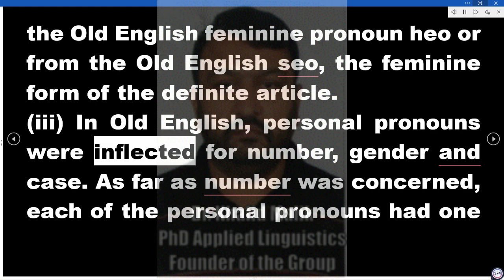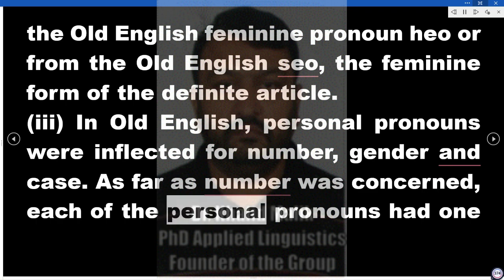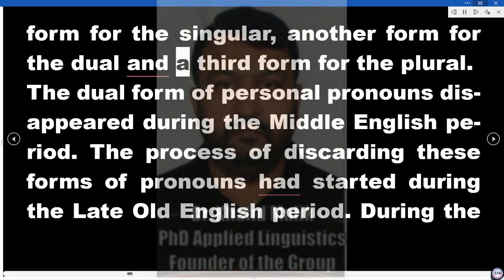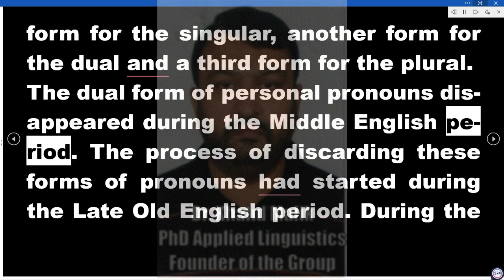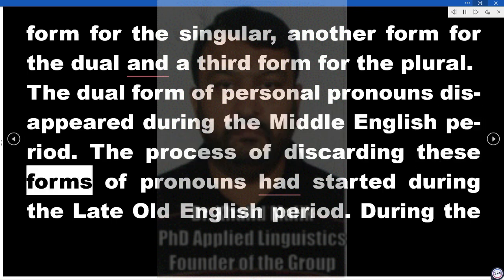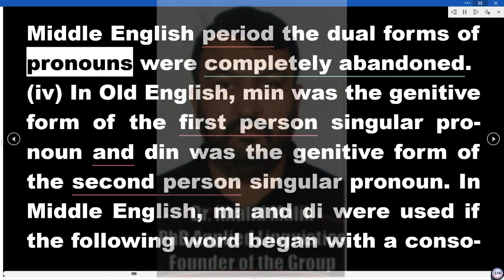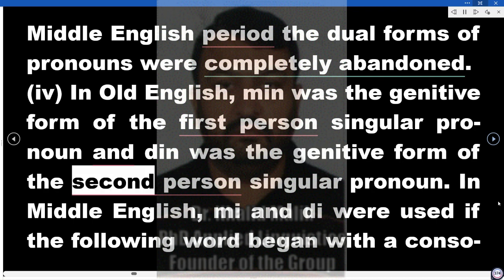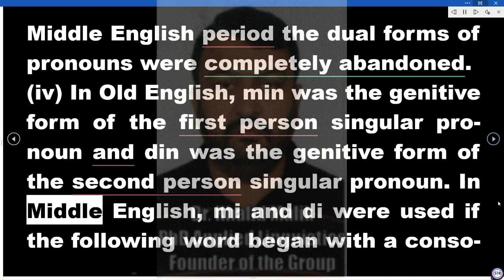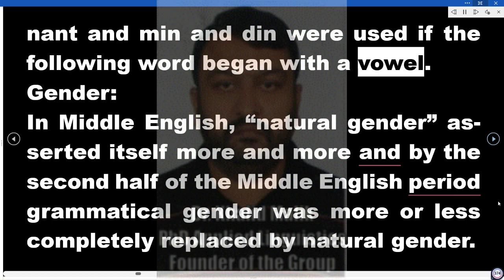In Old English, personal pronouns were inflected for number, gender and case. As far as number was concerned, each of the personal pronouns had one form for the singular, another form for the dual and a third form for the plural. The dual form of personal pronouns disappeared during the Middle English period — the process of discarding these forms had started during the late Old English period and was completely abandoned in Middle English. In Old English, 'min' was the genitive form of the first person singular pronoun and 'din' was the genitive form of the second person singular pronoun. In Middle English, 'mi' and 'di' were used if the following word began with a consonant, and 'min' and 'din' were used if the following word began with a vowel.